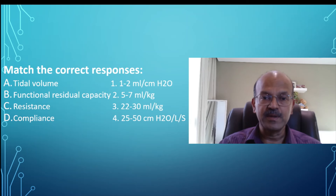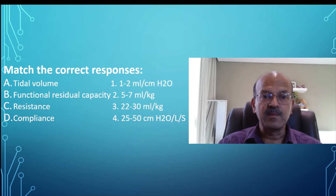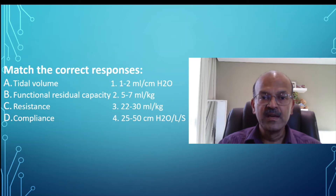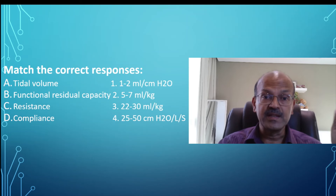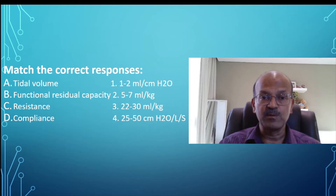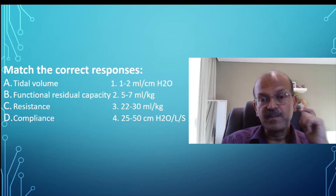Resistance is measured in centimeter of water per liter per second, and the value given here is 25 to 50 centimeter water per liter per second. Compliance is 1 to 2 ml per centimeter water, because compliance is the unit change in volume for a unit change in pressure — volume in ml and pressure in centimeter water.